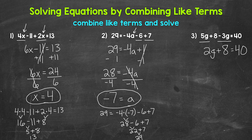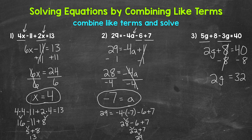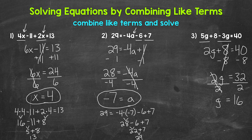Let's undo the addition first — the inverse operation is subtraction. Subtract eight from both sides. On the left side, adding eight and subtracting eight cancel out, giving us two G equals 40 minus eight, which is 32. Now we have two G equals 32, meaning two times G equals 32. To undo the multiplication, divide both sides by two. The twos cancel on the left side, leaving G isolated.